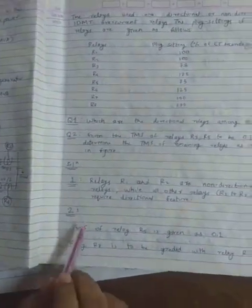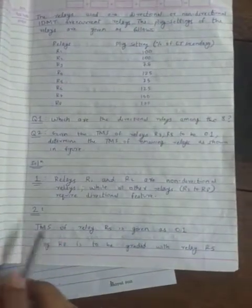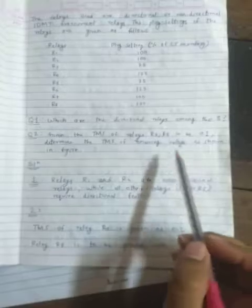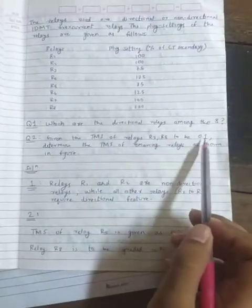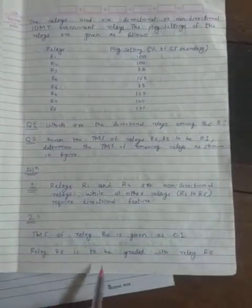Now for the solution of the second question, we can see that TMS, in the question it is given, TMS of 3rd and 5th is 0.1. Let us first consider the TMS of 5th relay. The TMS of 5th relay is 0.1. So now relay R8 has to be graded with respect to R5.